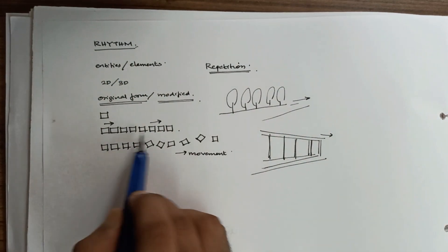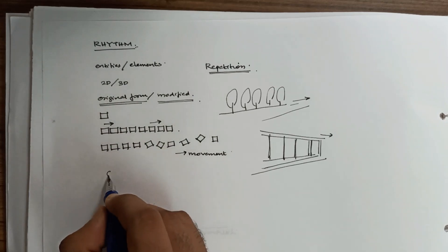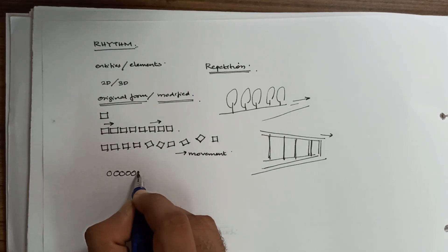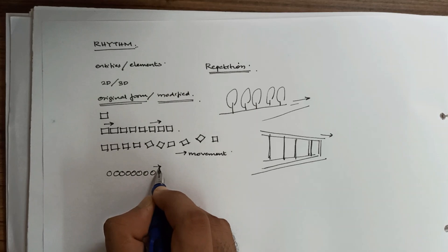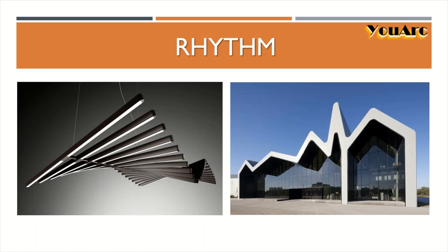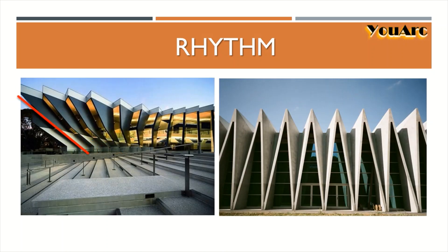It can be a square, it can be a circle creating rhythm. Now let's look into the examples of rhythm. Note how the individual entities are repeated in a particular direction so as to create a sense of rhythm.